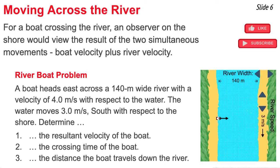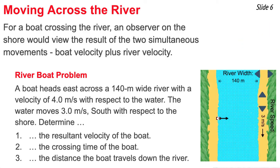A common problem is often worded like this: a boat heads east across a 140-meter wide river with a velocity of 4 meters per second with respect to the water, and the water is moving 3 meters per second south with respect to the shore. Three common questions are: determine the resultant velocity of the boat, the crossing time of the boat, and the distance the boat travels down the river. We're going to look at each of these questions separately.